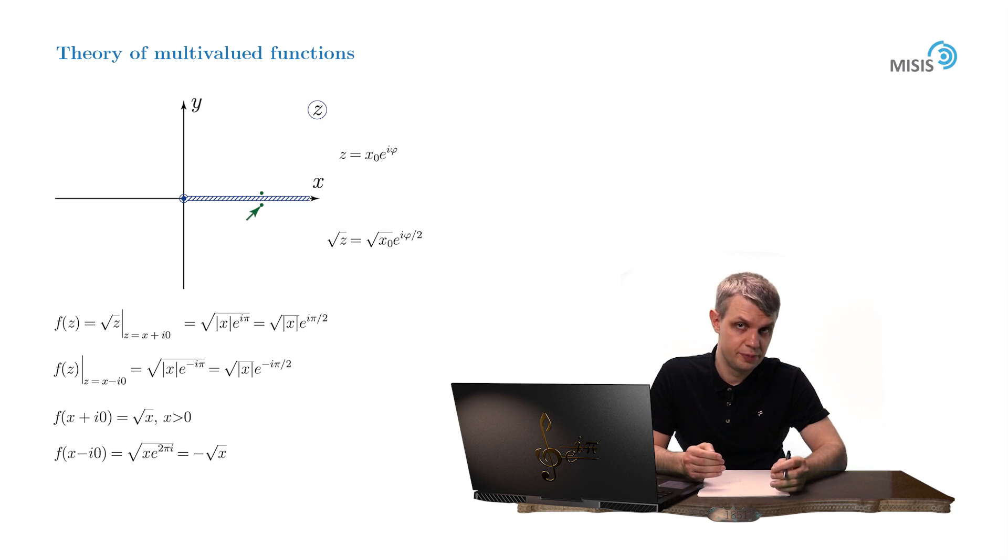Here, let's elaborate a little bit further. We've just decided that our square root function assumes the arithmetic value on the upper bank of the branch cut. Now, by drawing different contours from the upper bank of the branch cut into all the possible points in the complex plane, we determine a unique value for our square root function in any point.